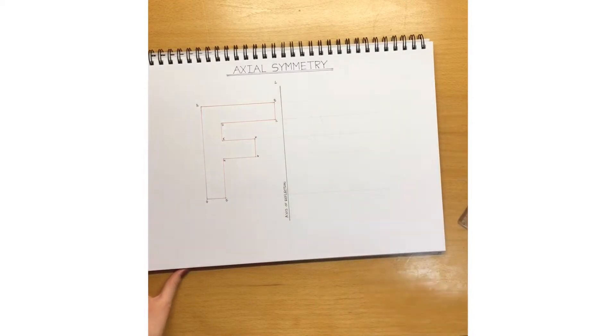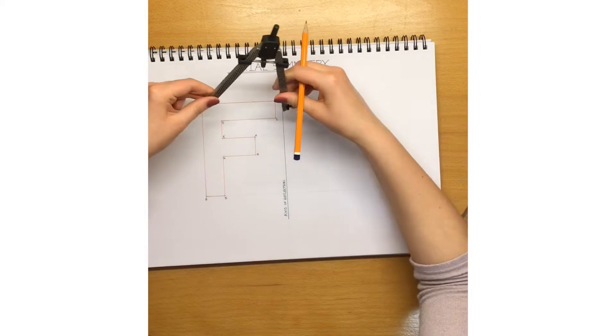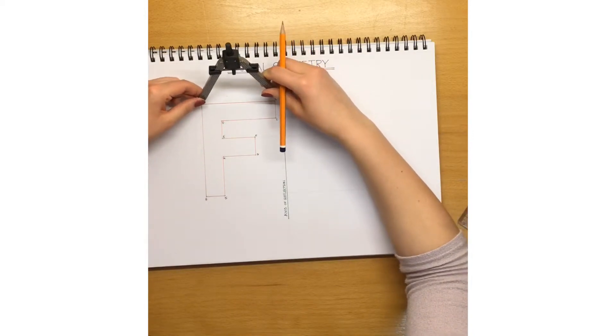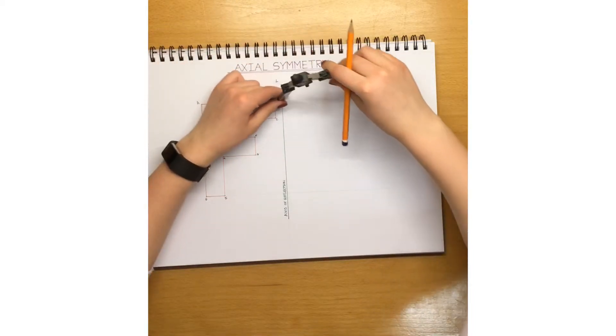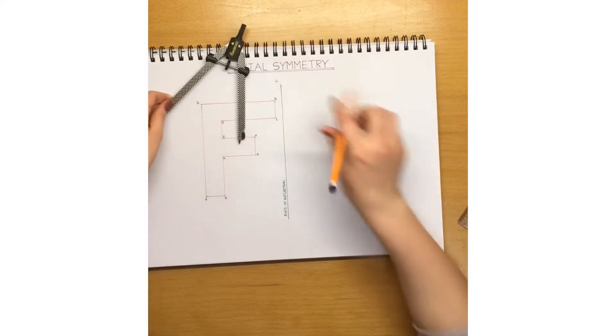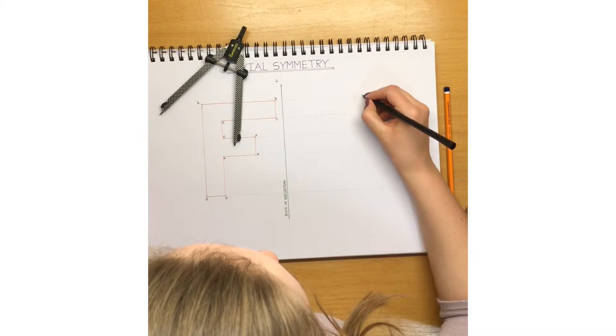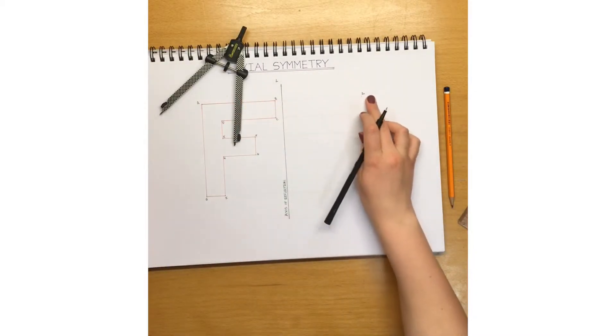Next, we're going to get our compass and take the distances from the axis of reflection and swing them across. It's very important to label each point, so I'm going to label this A1 because I had one movement from A across.